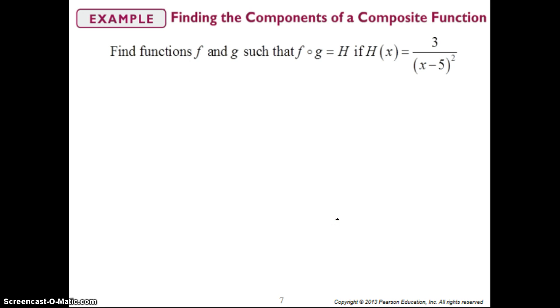And then here is another example. We've got h of x is 3 over x minus 5 squared. So again, we want to try to figure out what is g of x, what is f of x. So do you see that x minus 5 is kind of our inside function? So if we look at g of x as x minus 5, what would you say that f of x would be? Wouldn't you say that f of x would have to be 3 over x squared?